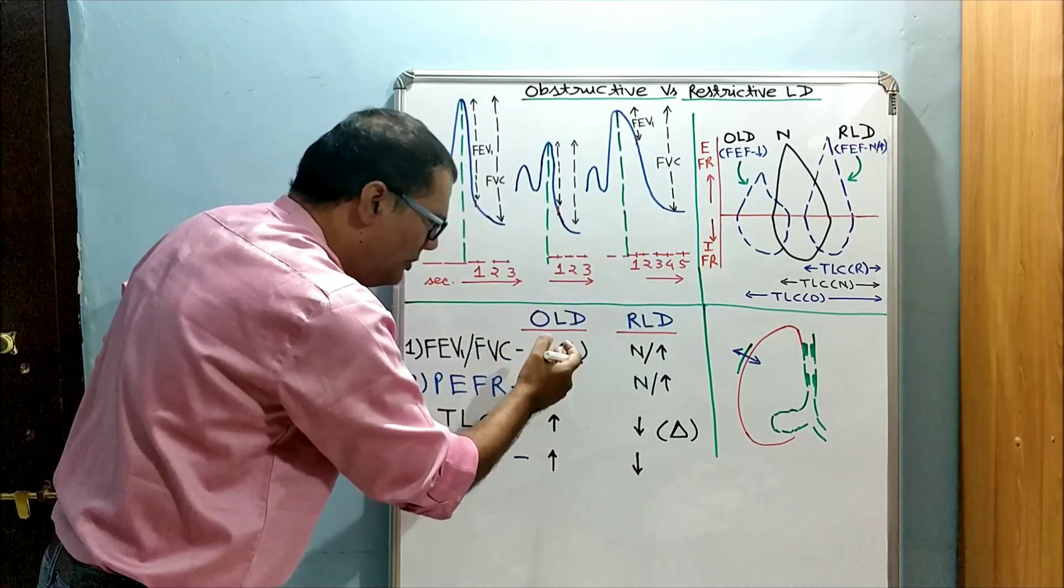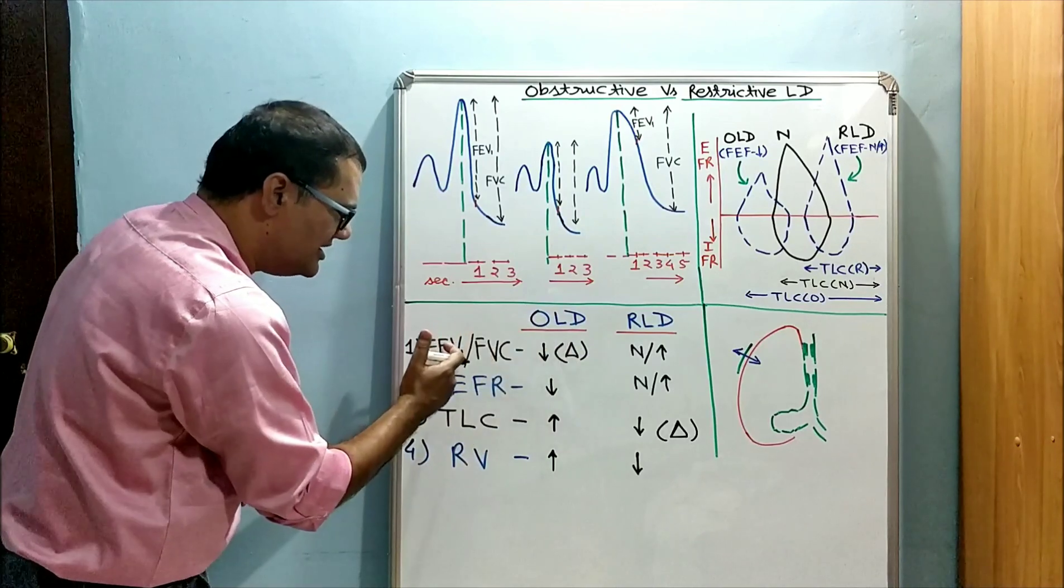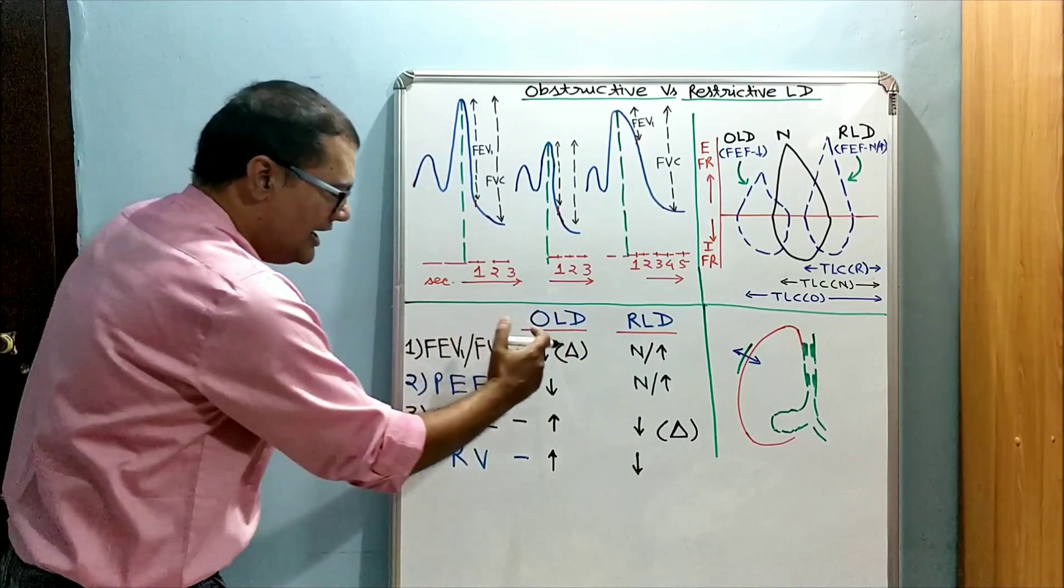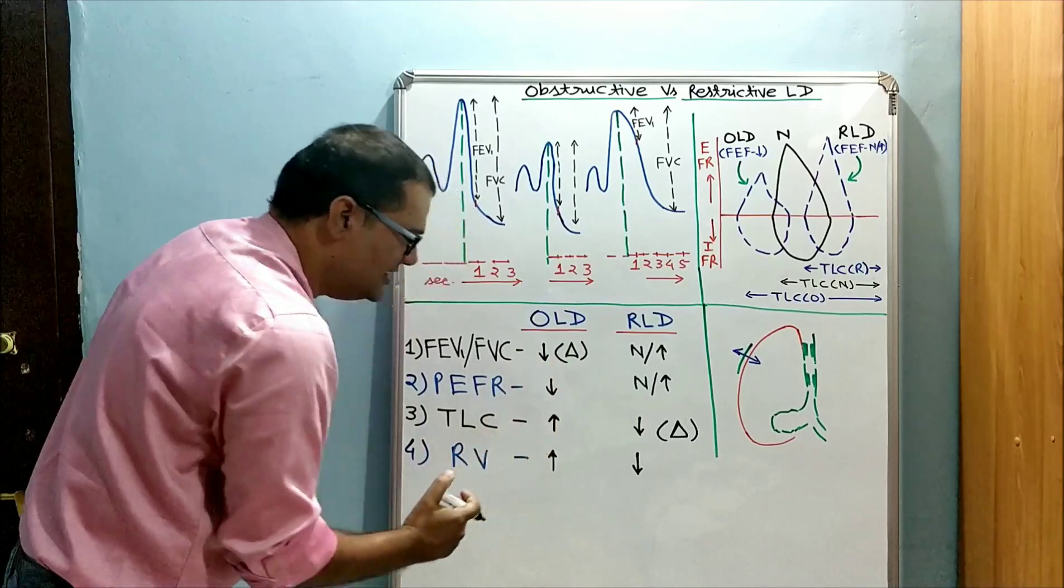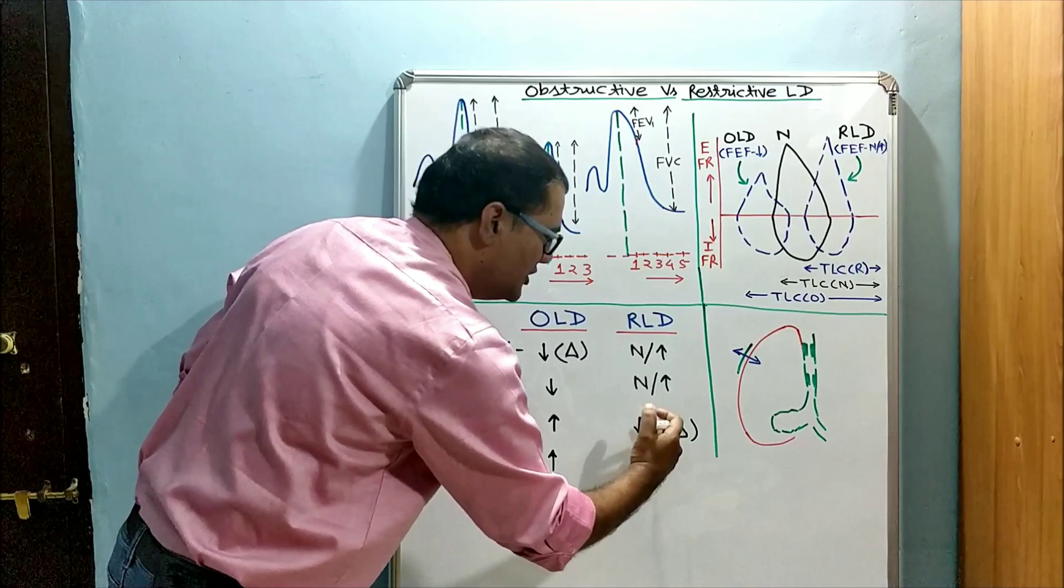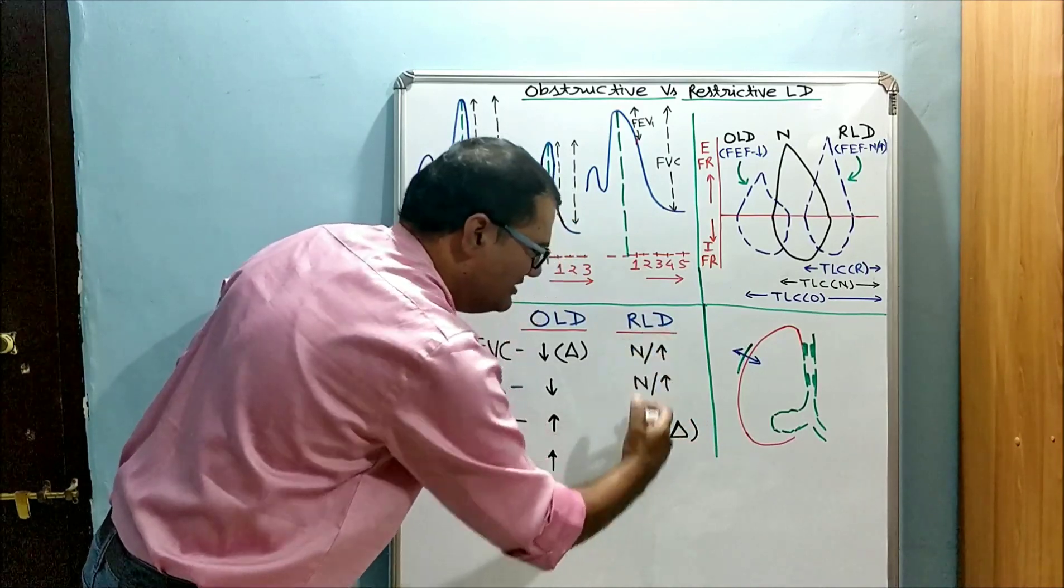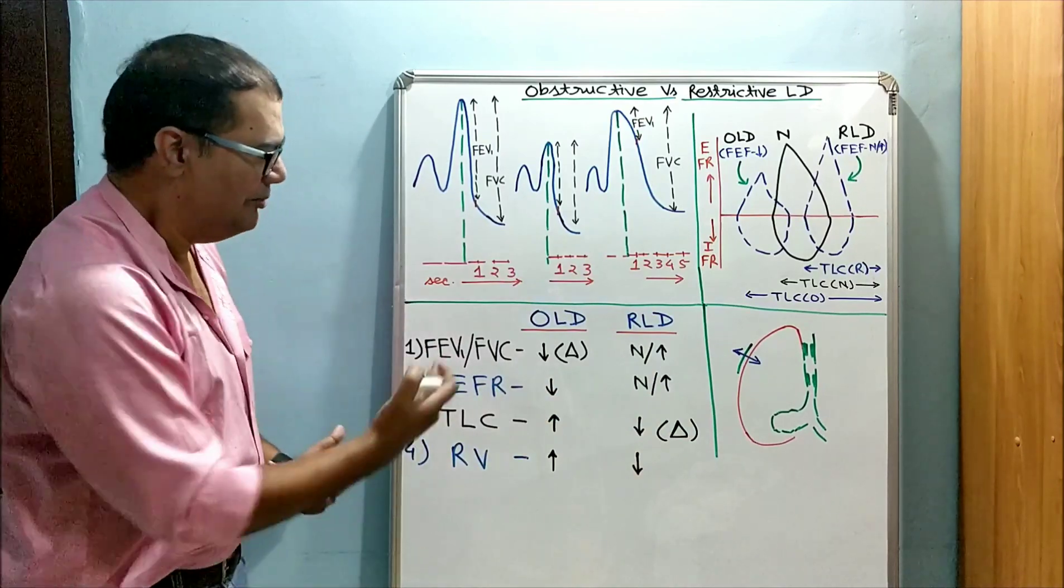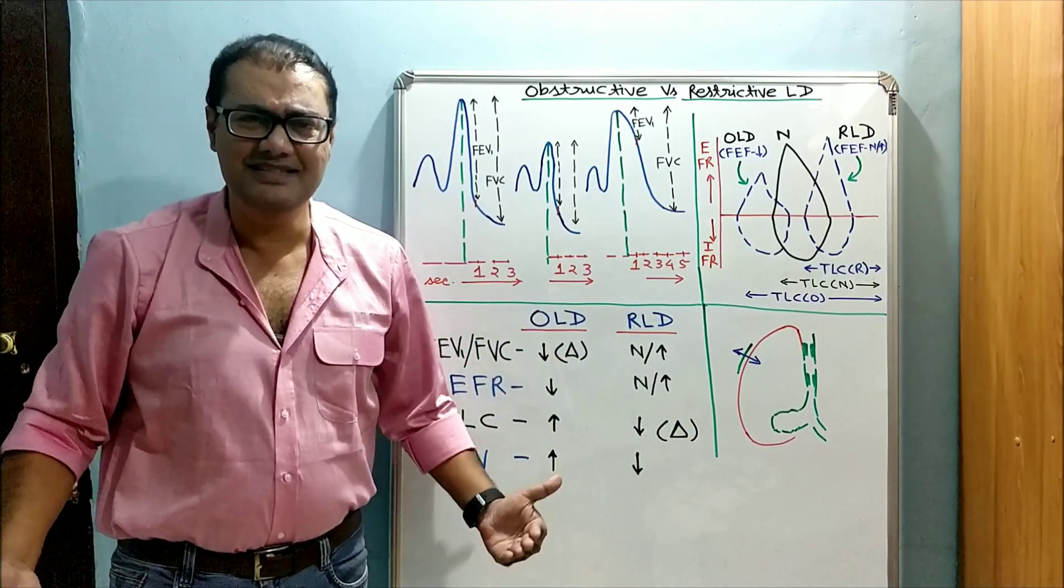So this group is diagnosed on the basis of reduced FEV1-FVC ratio, supported by these changes. Restrictive, on the other hand, is diagnosed on the basis of decreased total lung capacity, supported by these changes. Very important pulmonary function tests to differentiate and diagnose both groups of pulmonary diseases.